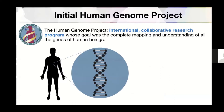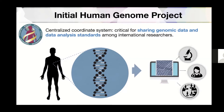For the past two decades, we've celebrated work from the initial Human Genome Project. This was an international collaborative research program where the goal was to completely map and understand all of the genes of human beings. The Human Genome Project released a reference genome, which serves as a resource for developing workflows that have driven research internationally, helping us make new discoveries in basic science, clinical science, and population genetics — enabling sharing of genomic data and standard analysis around the world.